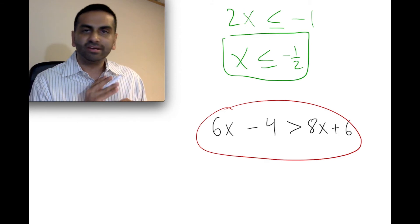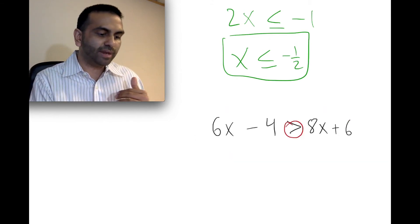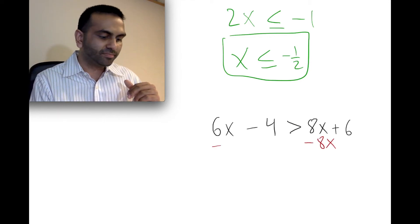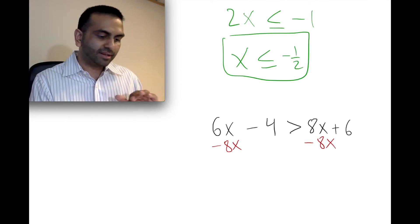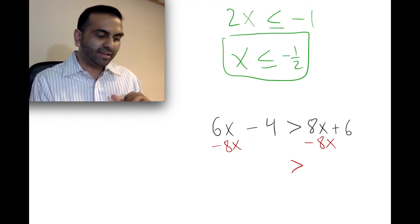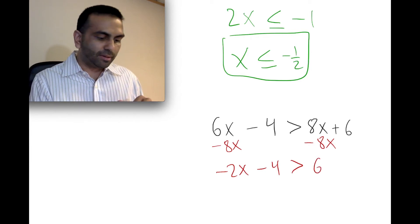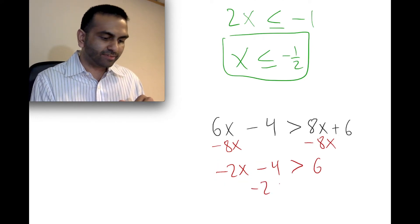Now let's do a different problem. Again, we're going to solve this the same way we would any equation. We want to get all the x's together, so we subtract 8x from both sides. Adding or subtracting doesn't flip the sign, so this is still going to be greater than. We have 6x minus 8x, which is negative 2x, minus 4. On the right-hand side we just have 6. Now we add 4 to both sides, giving us negative 2x is greater than 10.